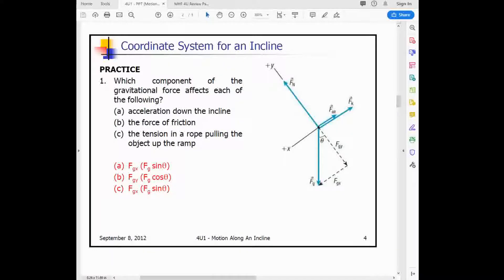So again, this slide here is just what I was kind of explaining. What component of the gravitational force affects each of the following? So acceleration down the incline, the FGX would be in the direction of that acceleration. The FGY would not be, that would be perpendicular to it, so it would not be affecting it. The force of friction, the FGY, because that has a component that is horizontal, that would be affecting the force of friction. And the tension in a rope pulling an object up a ramp, that would be the FGX, because if it's pulling it up a ramp, then that would be in that direction of the incline.